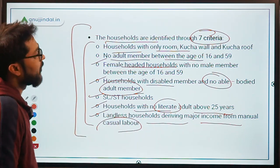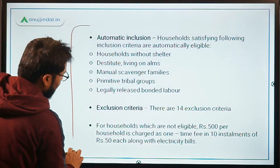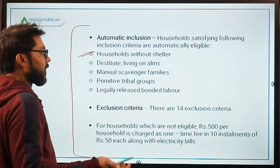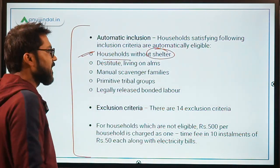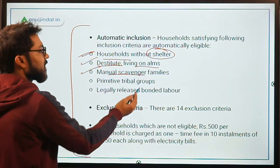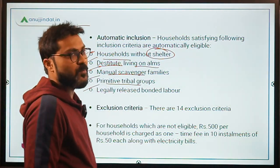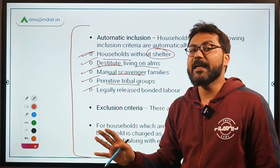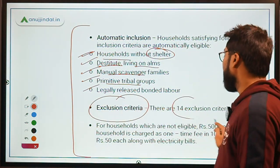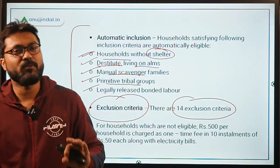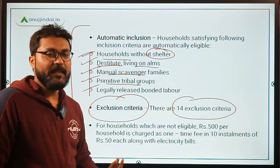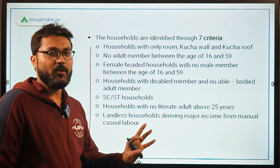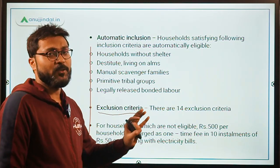There are also automatic inclusion criteria. If there is any household without shelter, that household is automatically eligible. Others automatically included are: any destitute living on alms, manual scavengers' families, primitive tribal groups, and legally released bonded labourers. There are also 14 exclusion criteria, but you do not need to remember them for the exam.